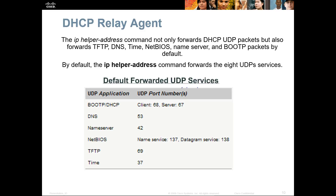The default DHCP relay agent has some default forwarding services. For example, BOOTP and DHCP — the client uses port 68, and the server uses port 67. You want to know these common UDP ports. DNS is port 53, name server is 42, NetBIOS is 137, datagram service is 138, TFTP is 69, and Time is 37.